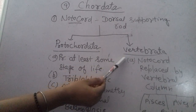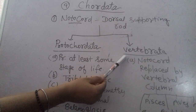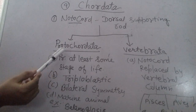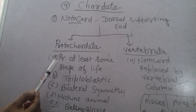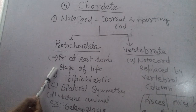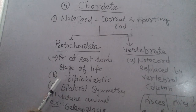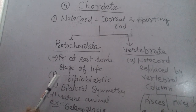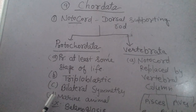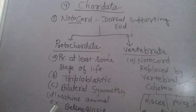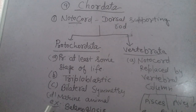In Vertebrata, the notochord changes into the vertebral column. Now, Protochordata are those in which the notochord is present at least at any stage. They are Triploblastic — made in three layers — bilaterally symmetrical, marine water, coelomate with a body cavity. Example: Balanoglossus.